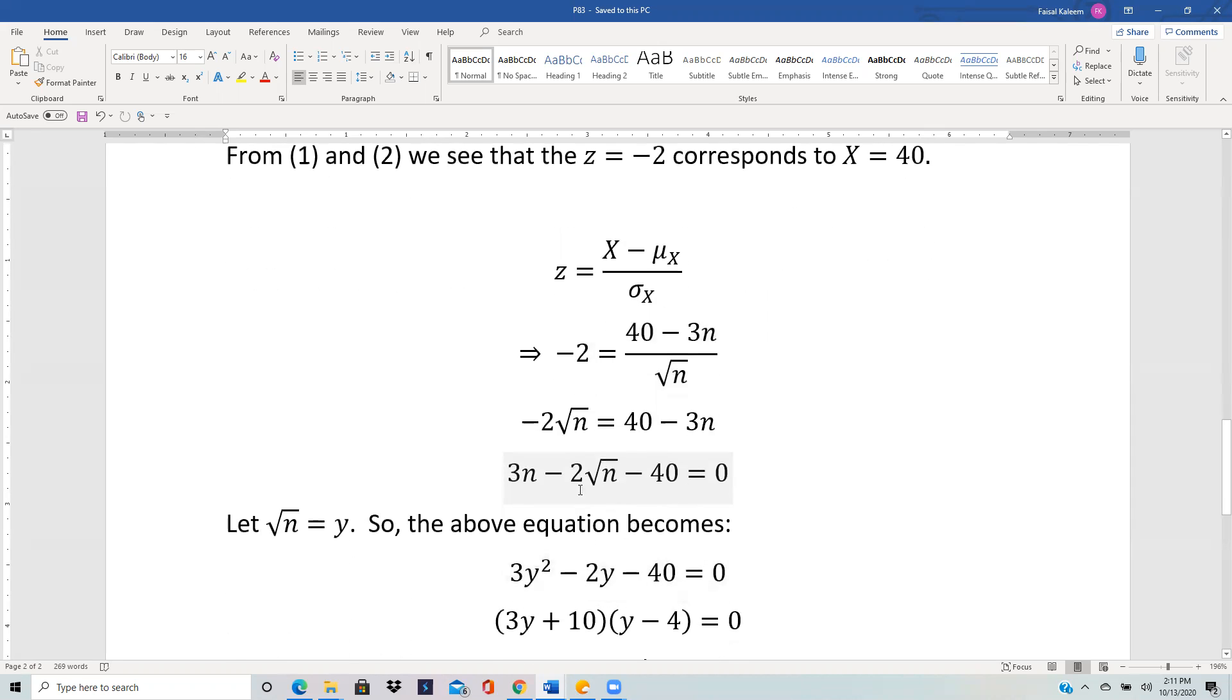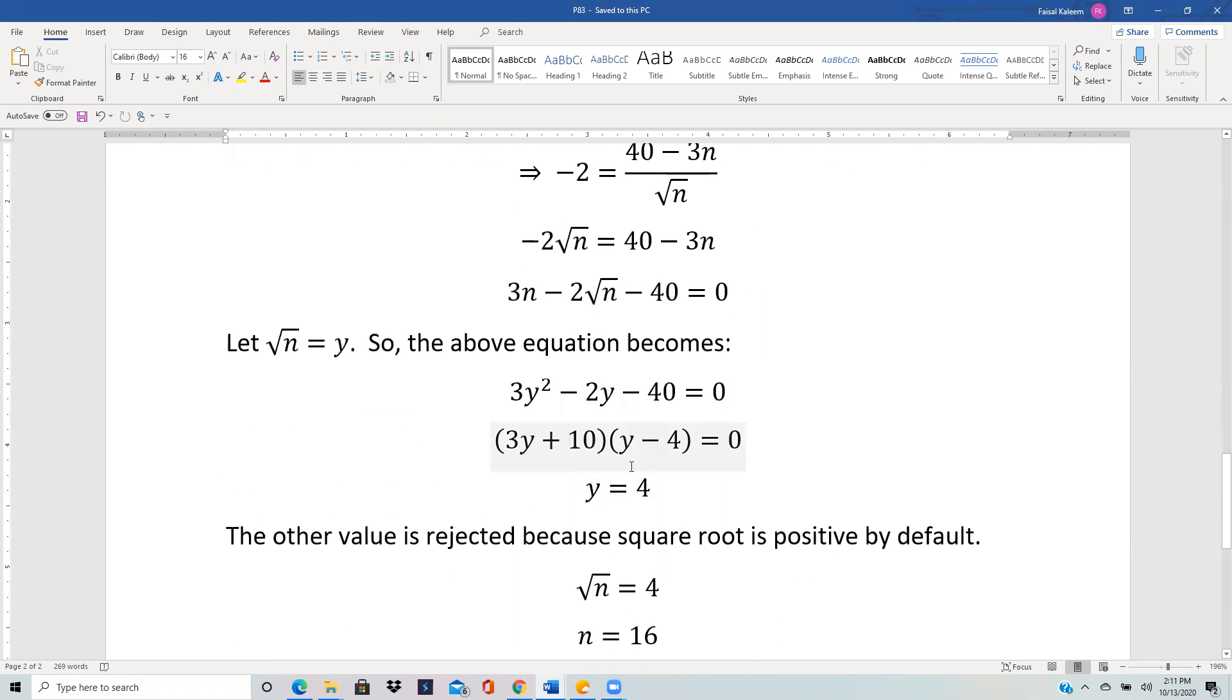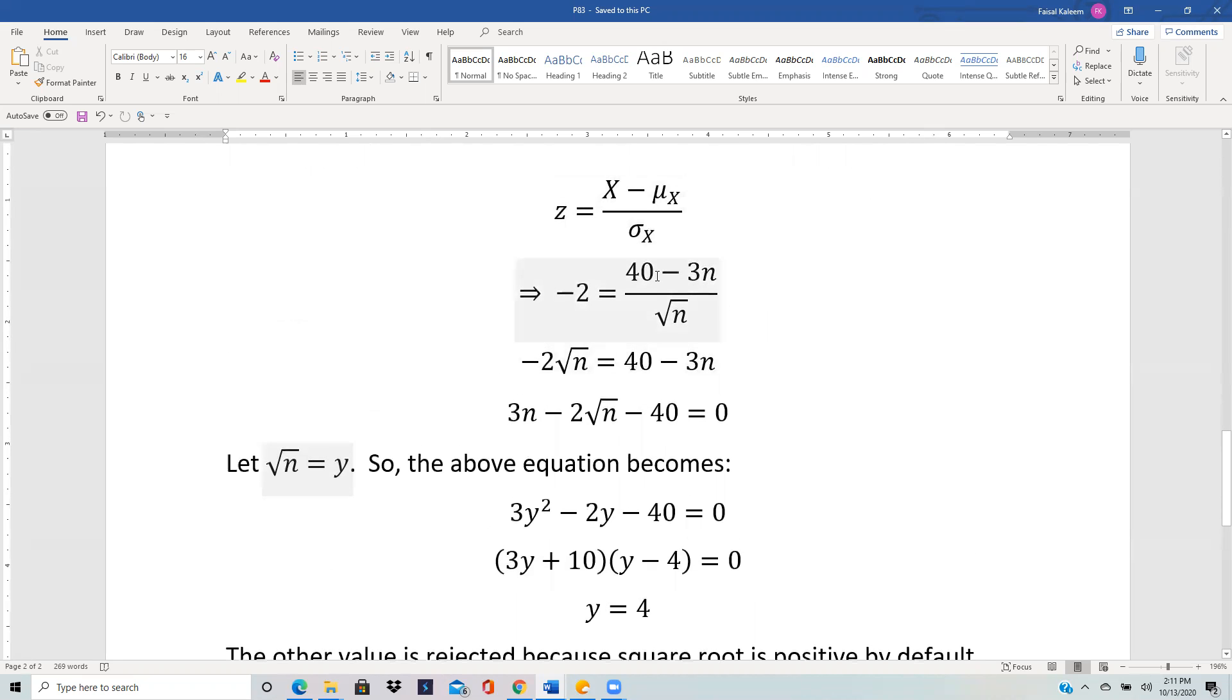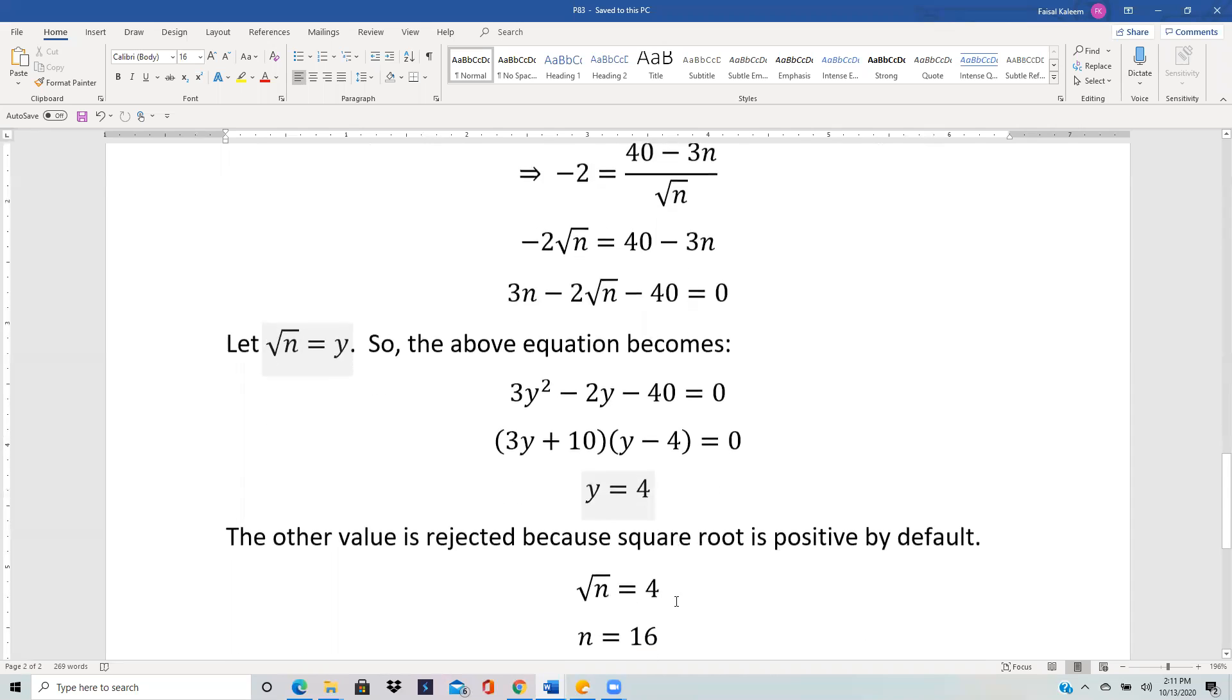After doing the algebra you get -2√n = 40 - 3n, which gives 3n - 2√n - 40 = 0. If you substitute √n = y, this is a quadratic equation that factors. So y is 4 and the other value is -10/3, but y is √n which is the standard deviation that has to be positive. So we don't take the negative value, we only take y = 4. Since y was √n, we have √n = 4, so n = 16.